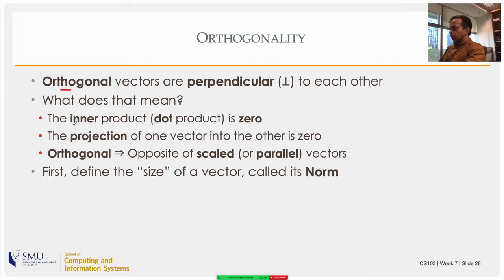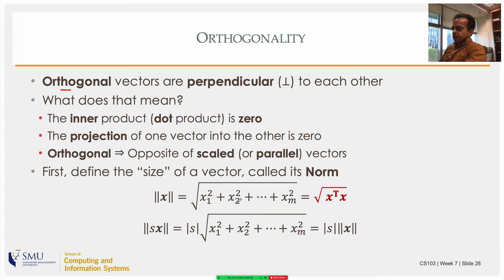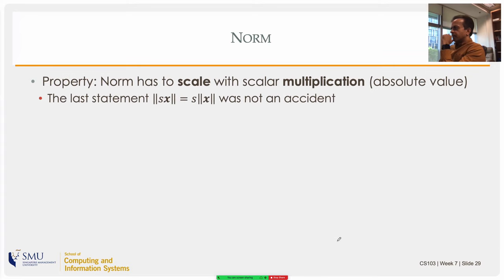A norm is defined as the square root of the sum of squares of the components: ‖x‖ = √(x1² + x2² + ... + xm²). This equals √(x^T x), so the dot product of a vector with itself is the square of the norm. If you scale a vector by a scalar s, the norm scales by |s|. So ‖s·x‖ = |s|·‖x‖. This is the Euclidean norm.